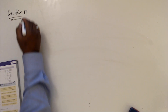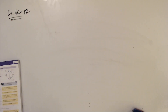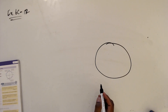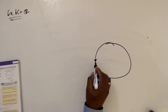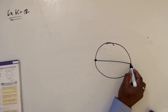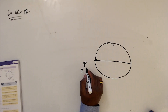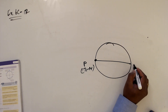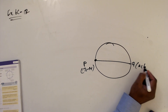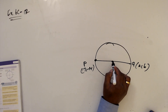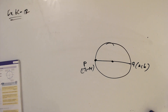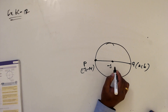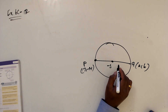Question number 12. P is equal to 7, minus 14. Q is a, b — we need to find it. The center is minus 3 and 7.